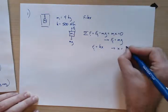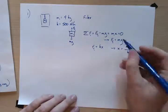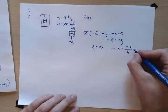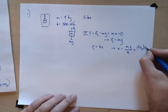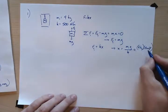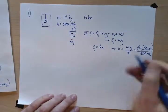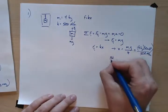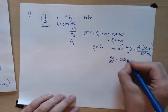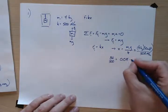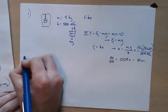x equals m1g divided by k. With 4 kilograms, roughly 10 meters per second squared for g, divided by 500 newtons per meter: that's 40 over 500, which is 0.08 meters — about 8 centimeters. That's part one.